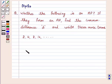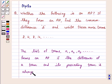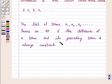Now we know that the list of terms a1, a2, a3, and so on forms an AP if the difference of a term and its preceding term is always constant. This constant is known as the common difference of AP.